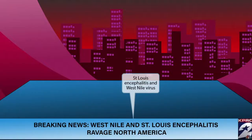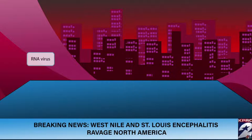Our story of West Nile and St. Louis encephalitis takes place in a news broadcasting studio during an outbreak of these viruses. We can see the banner along the bottom — breaking news: West Nile and St. Louis encephalitis ravage North America. From the red and warm color scheme, we can tell that both of these are RNA viruses. We like to use dark colors for DNA viruses and red and warm colors for RNA viruses.